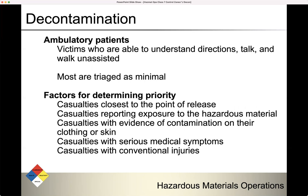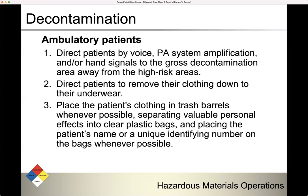For ambulatory patients, direct them by voice, PA system, or hand signals to the gross decontamination area away from high-risk areas. Direct them to remove their clothing down to their underwear. Place the patient's clothing in trash barrels whenever possible, separating valuable personal effects into clear plastic bags, and placing the patient's name or a unique identifying number on the bags whenever possible.